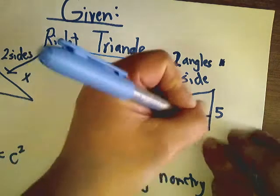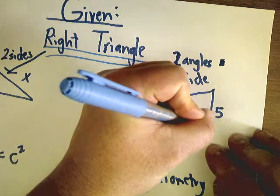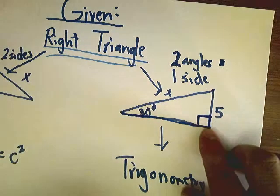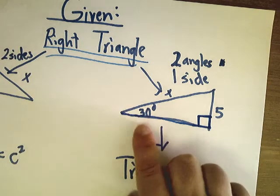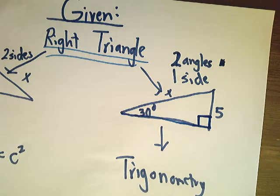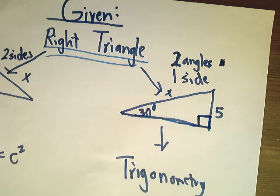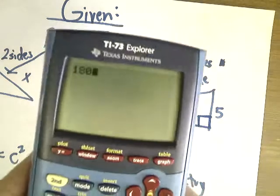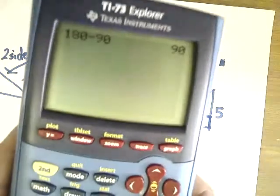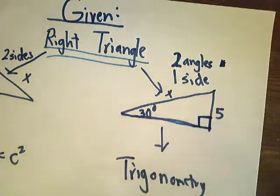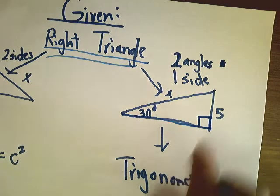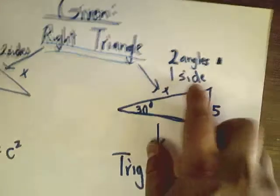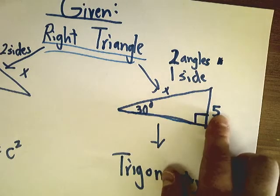Let's look at this triangle. I know this angle — that's one of my two angles — it's 90 degrees. The other angle has to be given to me; in this case, 30 degrees. The value of all angles inside a triangle is 180, so the third angle would be 180 minus 90 minus 30, which is 60. But we just need the two given angles and one known side, which is 5.